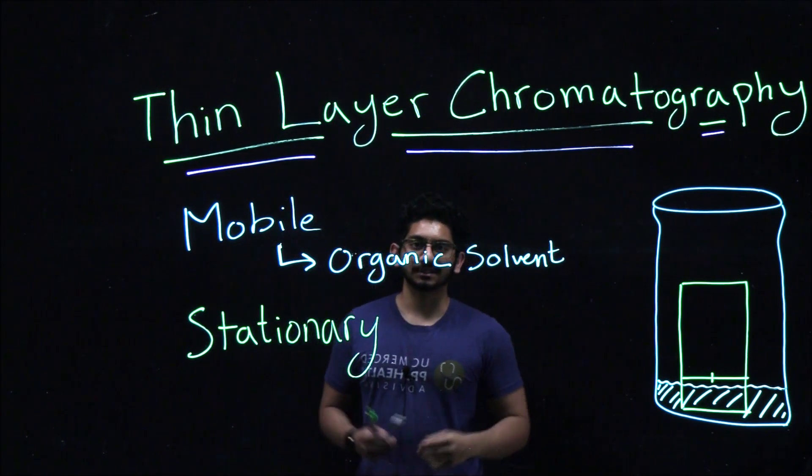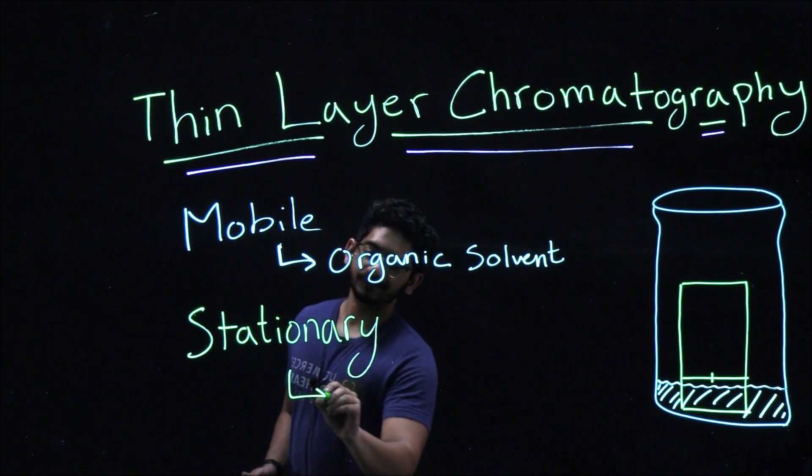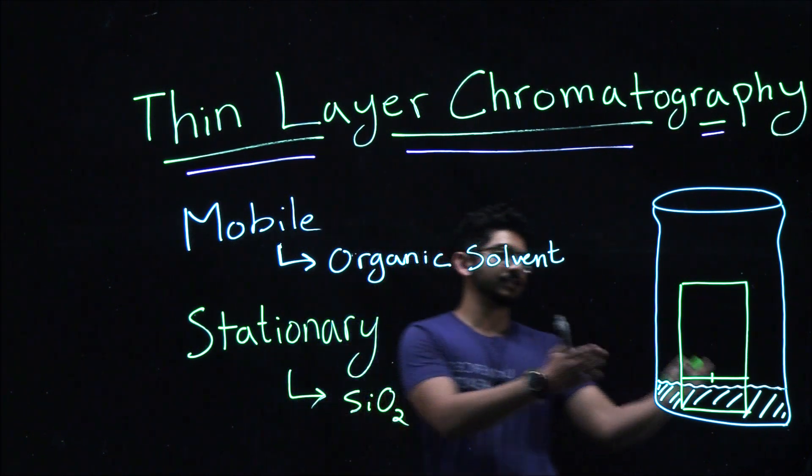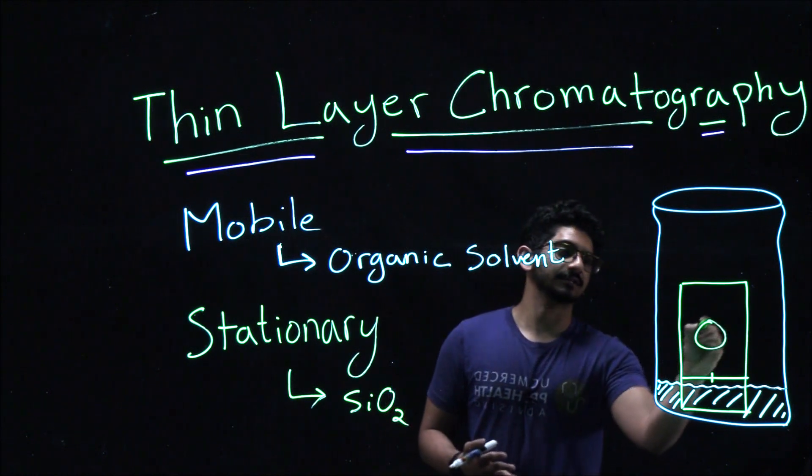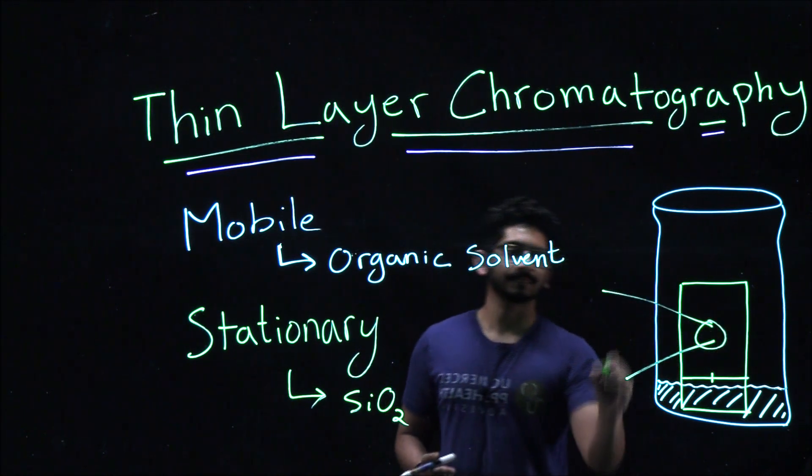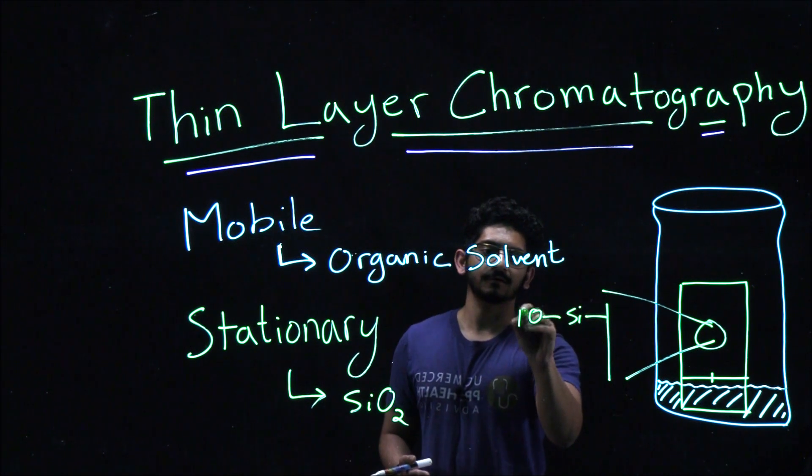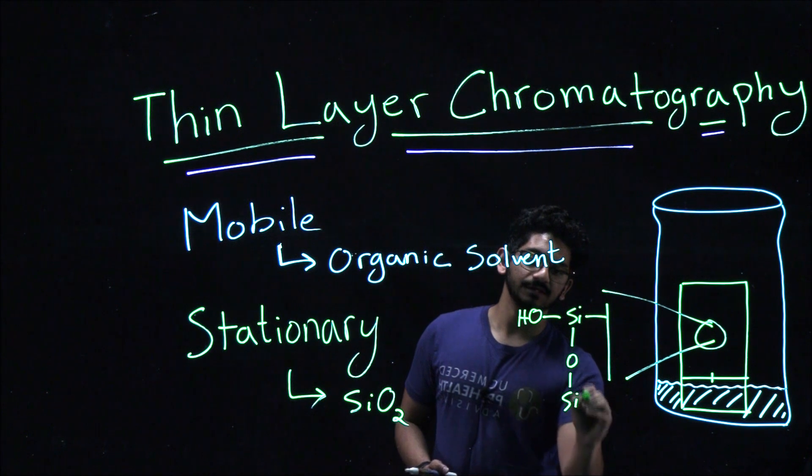The mobile phase is used to pull your compound through the stationary phase. Now the stationary phase is silicon dioxide. Here, outlined in green, is your TLC plate coated with silicon dioxide. If we zoom in, you'll actually have OH groups on the sides of your silicon plate.